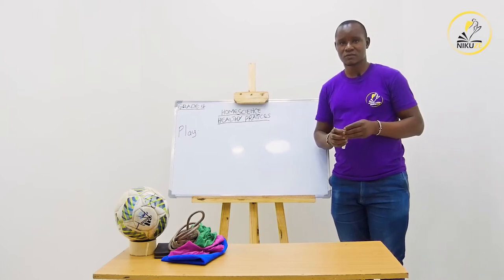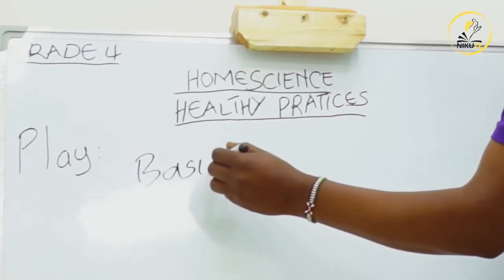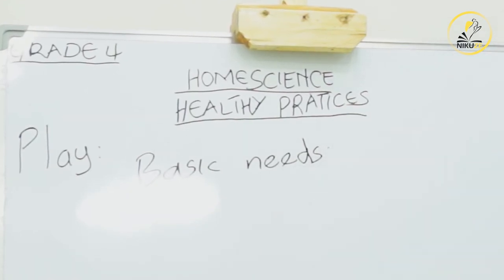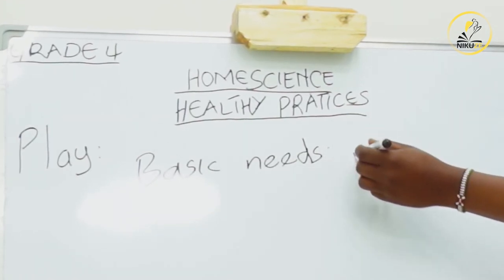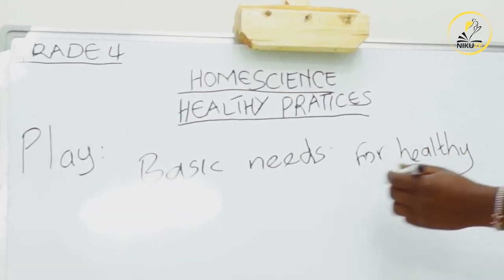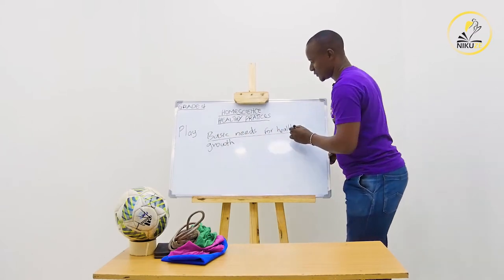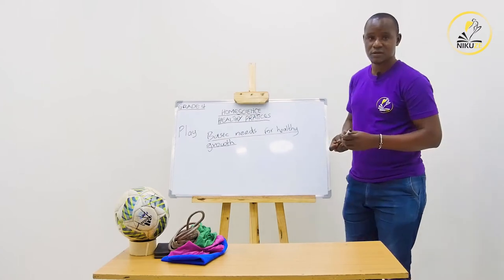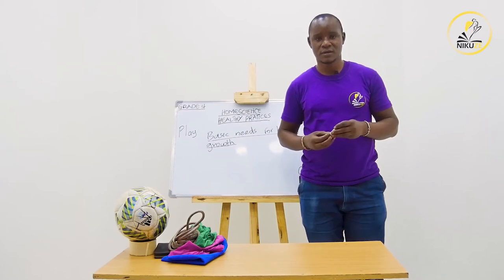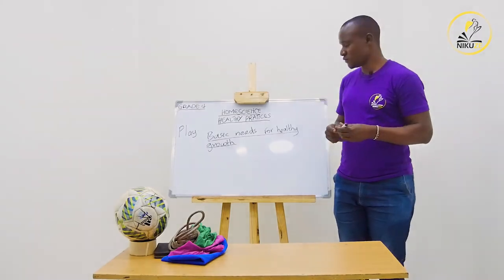Now we have got the basic needs — things that we need for day-to-day life activity for us to have proper growth and development. We have got five of them. The first one is good grooming.